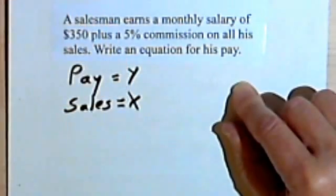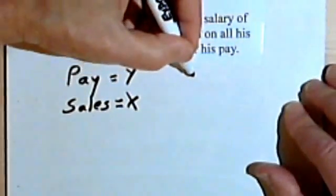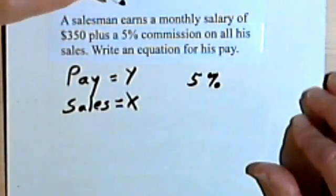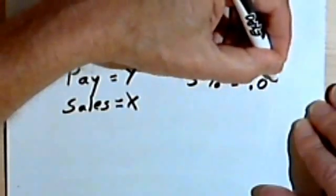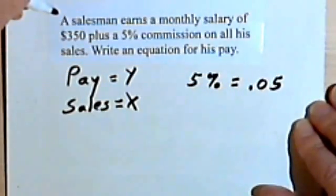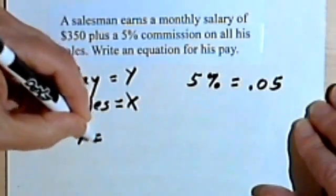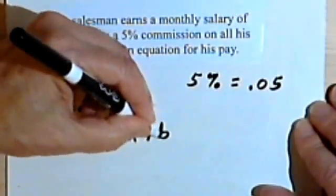Now let's also remember that 5%, five percent can be written as a decimal. Five percent is point zero five. And we want this in the form of y equals mx plus b.